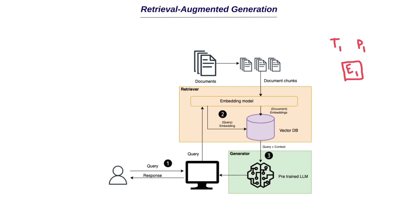We have the query embedding, which we can call qe. We try to find the nearest vector to this query among the 10 embeddings. Let's say a similarity search finds that chunks 8 and 9 are most similar to the question — meaning those contain the answer. We identify e8 and e9, and using the pointers, we retrieve the corresponding text. So starting from a query and a large document, after chunking, similarity search, and pointer lookup, we end up with the actual relevant text.